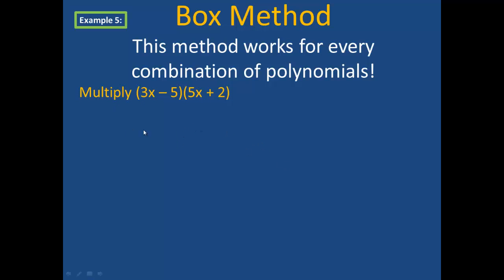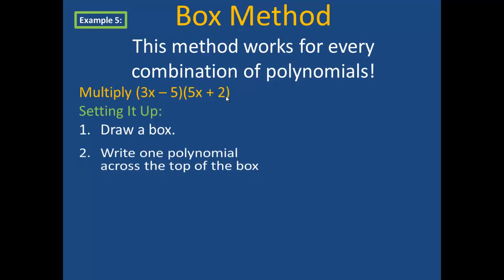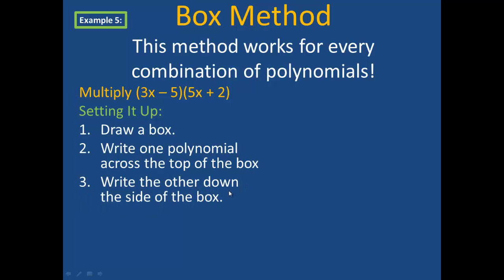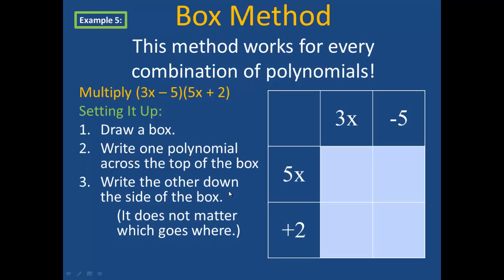In example 5, we are going to multiply 3x minus 5 and 5x plus 2. There are a few steps to setting up the box method, but it's well worth the time. First, you draw a box. You then write one polynomial across the top of the box and the other polynomial down the side of the box. And it doesn't matter which one you put where.